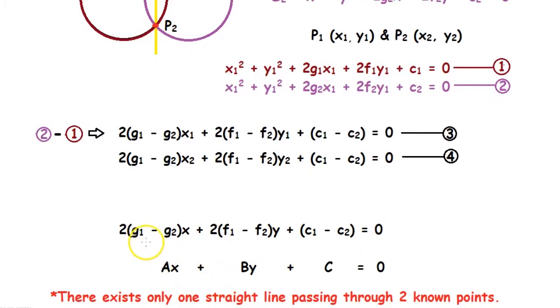Here we can see it is in the form Ax + By + C = 0. So it is an equation of a straight line. This equation satisfies the points P1 and P2 as we can see from equations 3 and 4. This means that this straight line passes through the points P1 and P2.